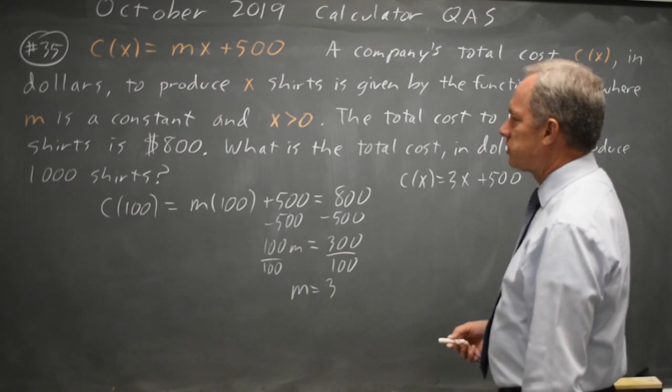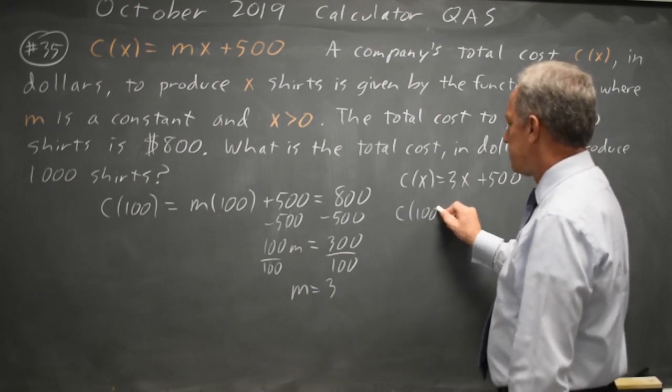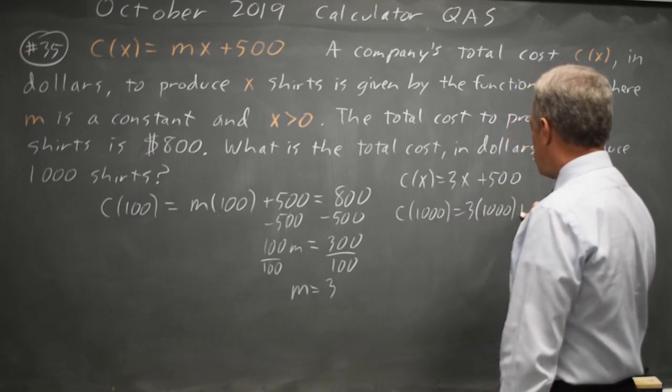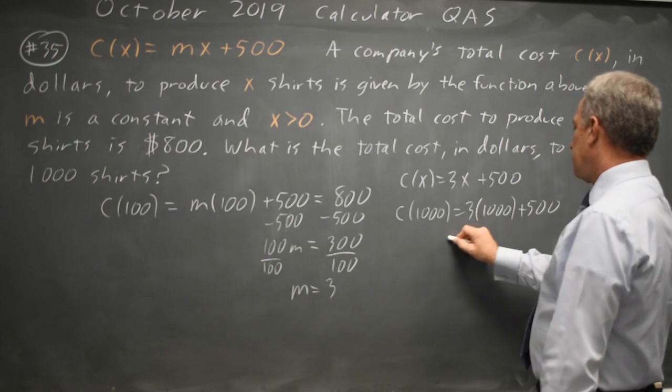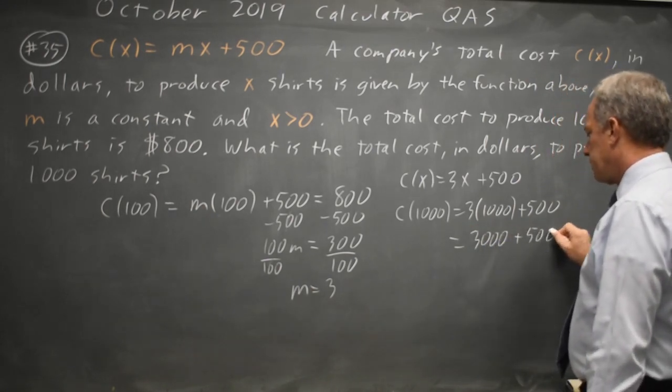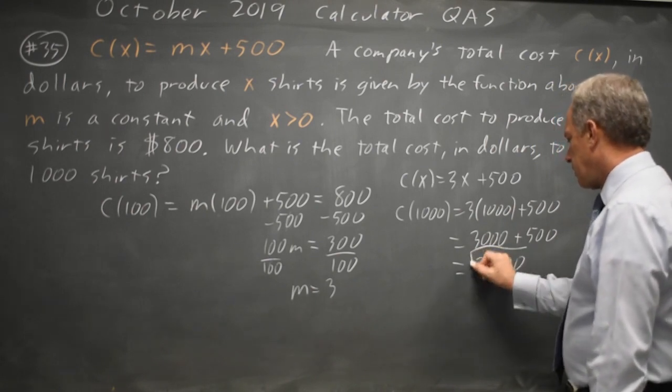And they want the total cost to produce 1,000 shirts. So, c of 1,000 equals 3 times 1,000 plus 500 equals 3,000 plus 500 equals 3,500. And that would be our answer.